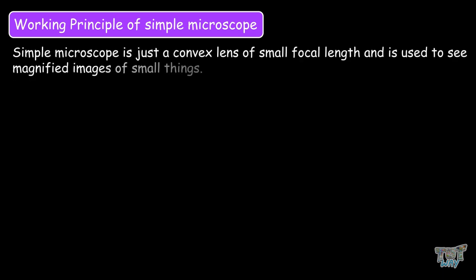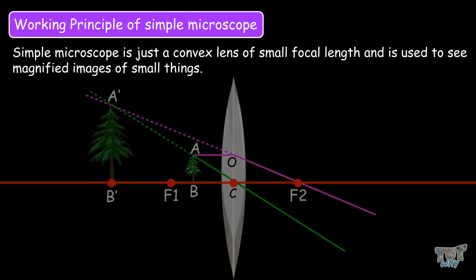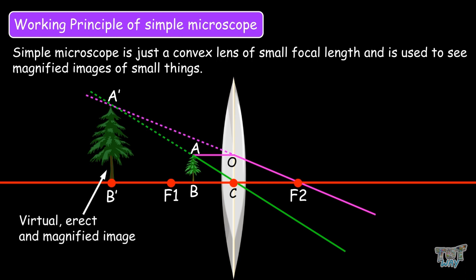Now let's learn the working principle of the simple microscope. A microscope or simple microscope is just a convex lens of small focal length, and it is used to see magnified images of small things. When an object is placed within the focus of the convex lens, a virtual, erect, and magnified image of the object is formed, which is viewed from the other side of the lens.